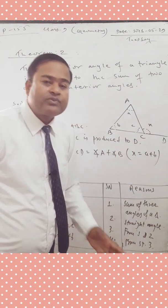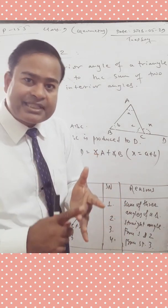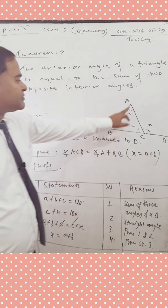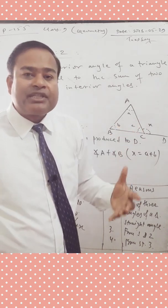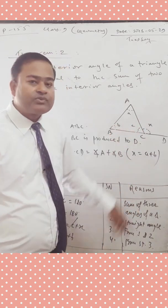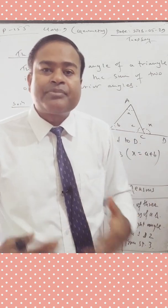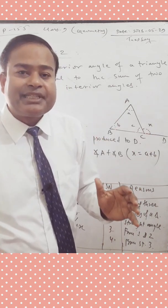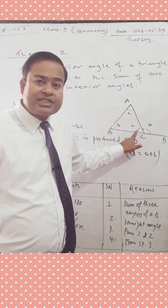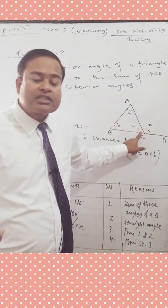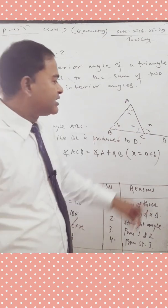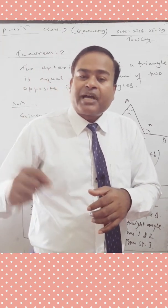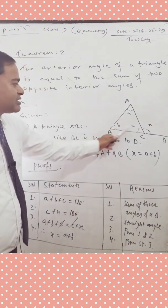Now let's go to the proof. We make a table with serial numbers, statements, and reasons. We know that the sum of the three interior angles of a triangle is 180 degrees — that is, A plus B plus C equals 180 degrees. We can now link this with the sum of the parts of a straight angle, which is also 180 degrees.